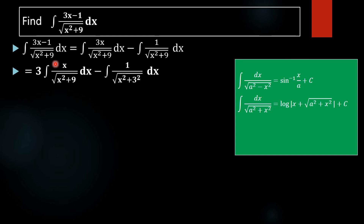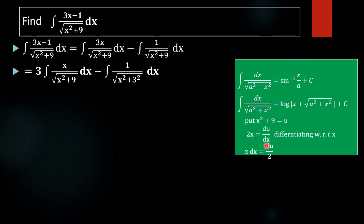For the first part, we use the substitution method. We put x squared plus 9 equal to u. Differentiating with respect to x gives 2x dx equal to du, so x dx equals du by 2.